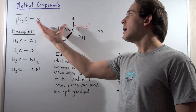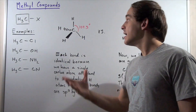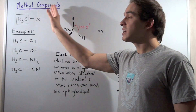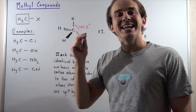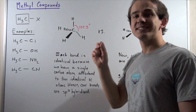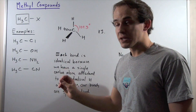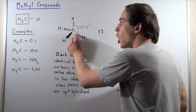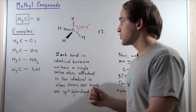Let's compare methyl compounds to something we already spoke about: methane. Methane is a methyl compound where the X has been replaced with H. Methane is the simplest alkane, and methane has symmetry. That's because the central carbon is attached to four identical H atoms.